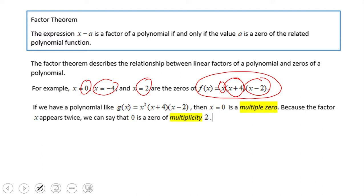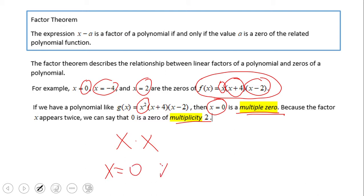But what happens if we have a polynomial like g of x, which has an x squared? We still have x equals 0 as a zero, but we call that a multiple zero with a multiplicity of 2, because we have a power of 2 — in other words, x times x. So x equals 0 appears twice.